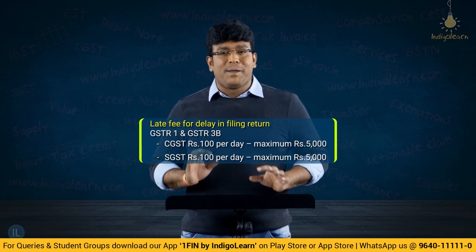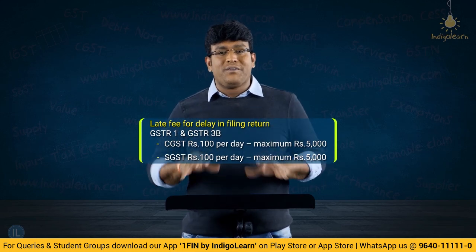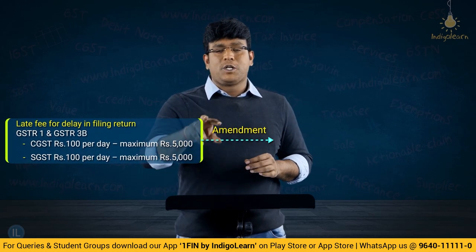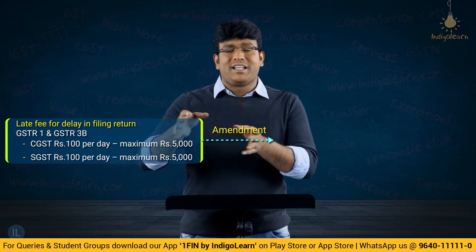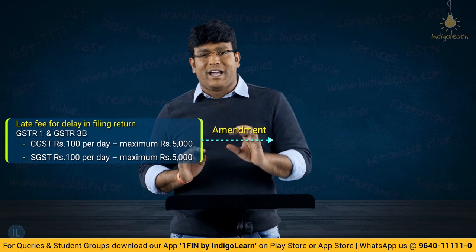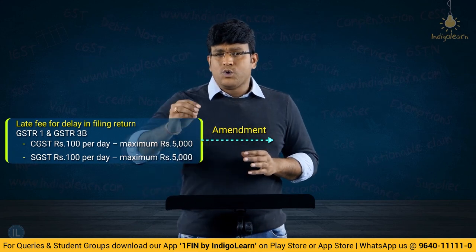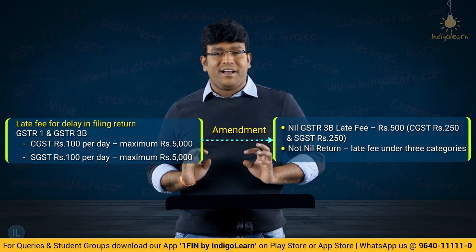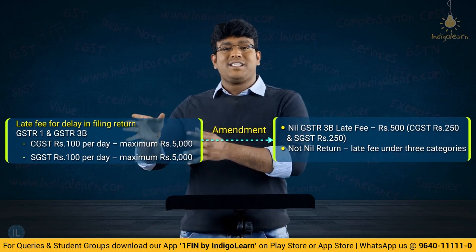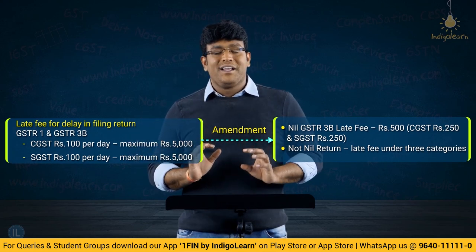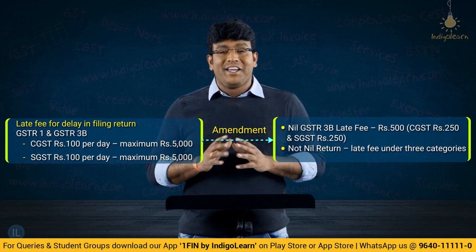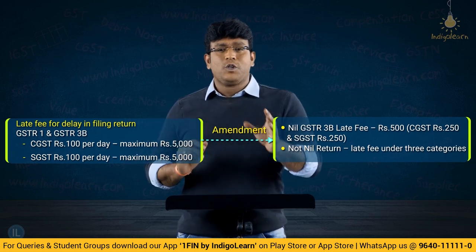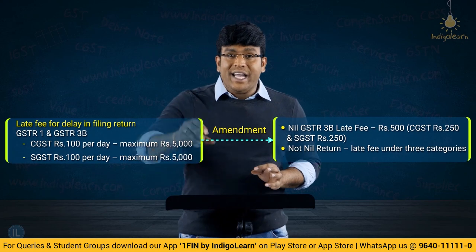One interesting latest amendment from June 2021 onwards: in case where there is no liability in GSTR-3B — that is, it is a nil return — the maximum late fees will be 250 under the CGST Act and 250 under the SGST Act, meaning a maximum of only 500. The normal maximum would have been 10,000, but for nil returns it is only 500.